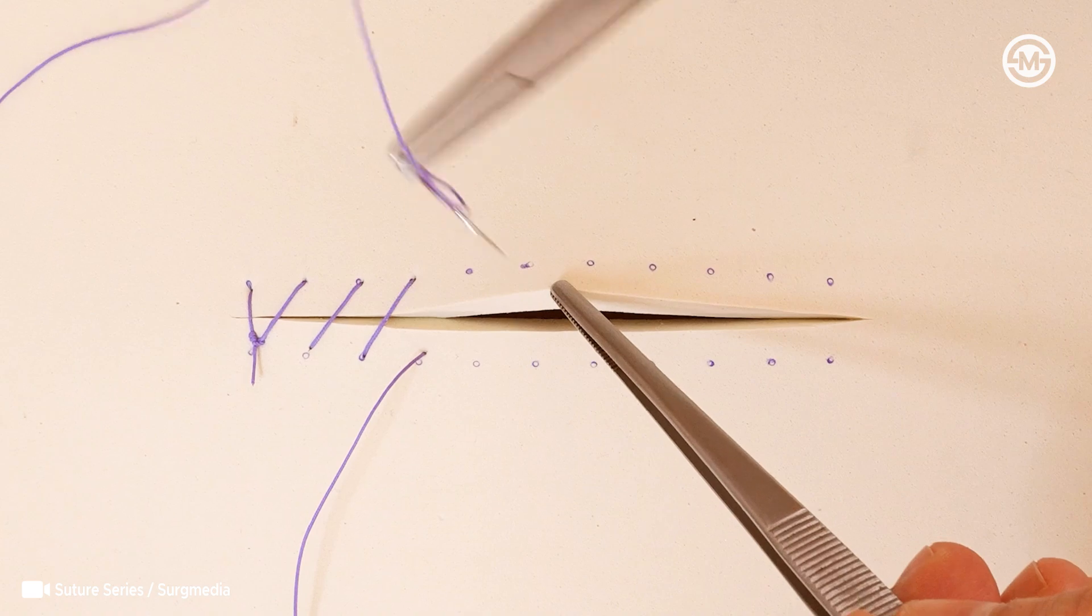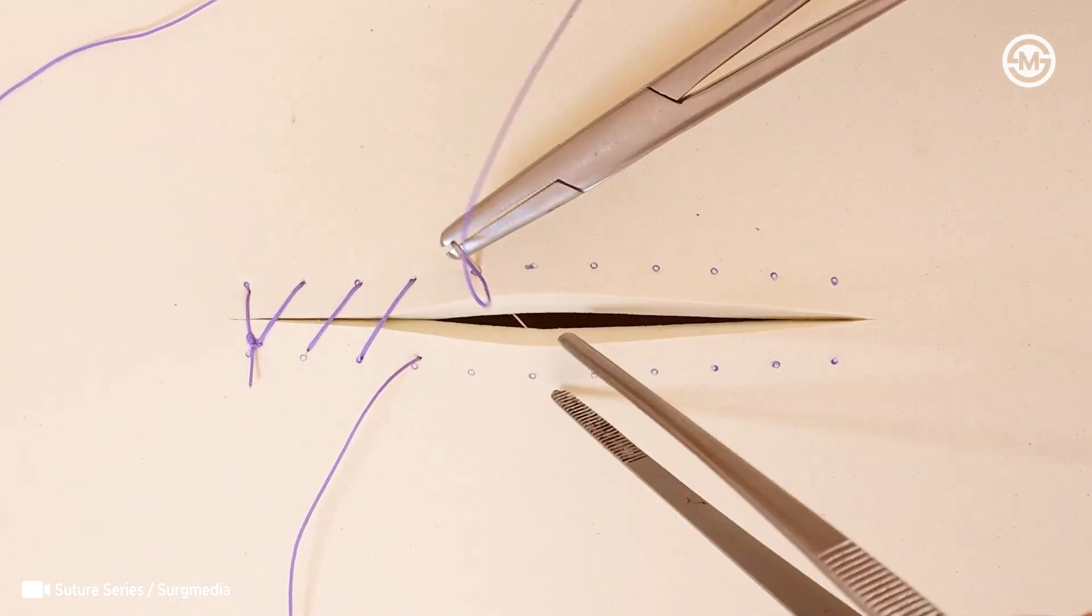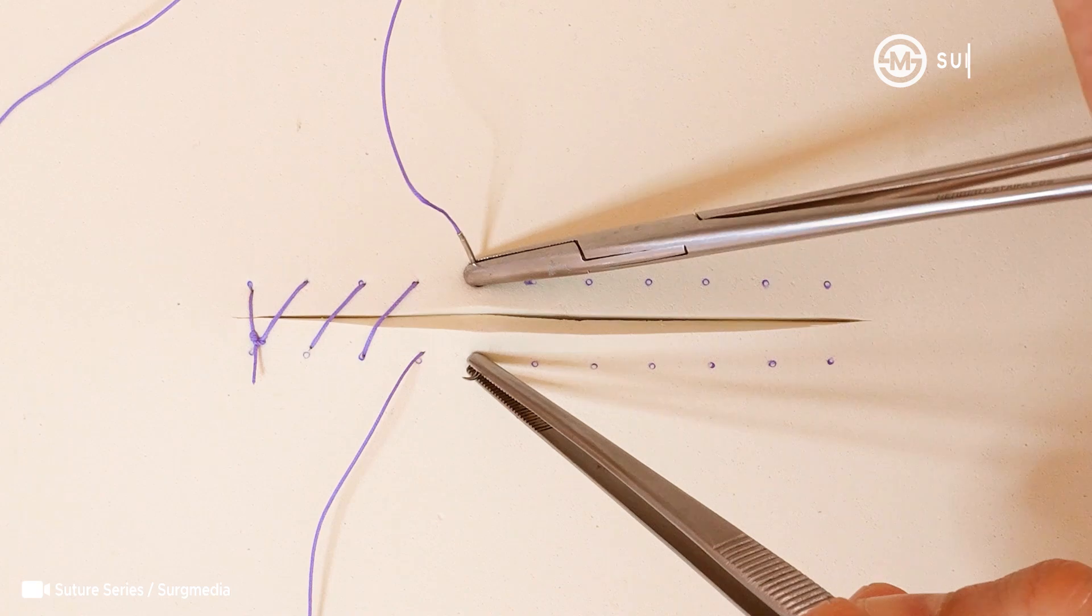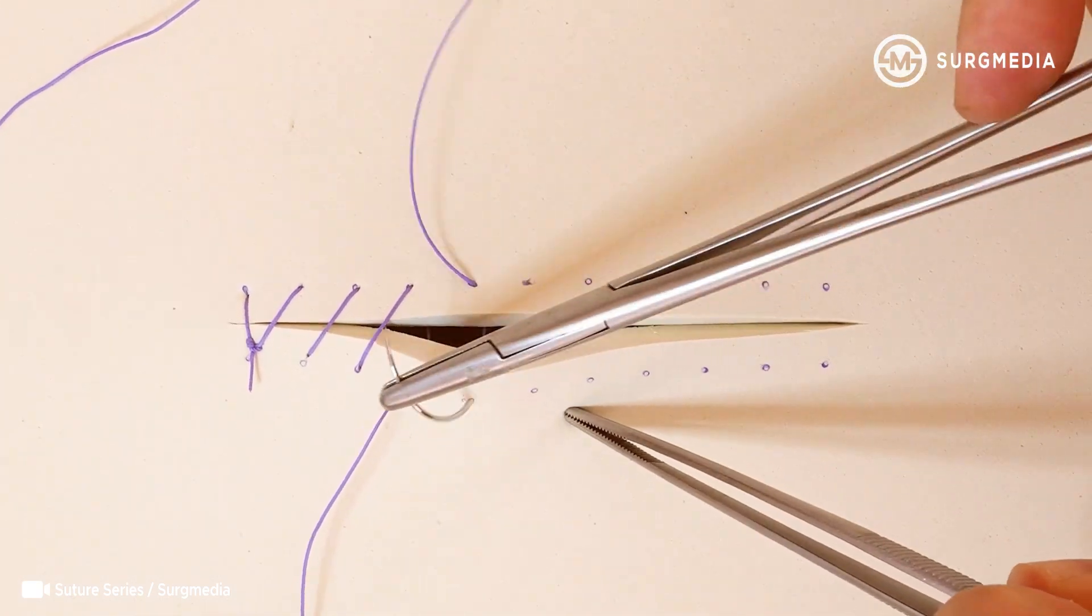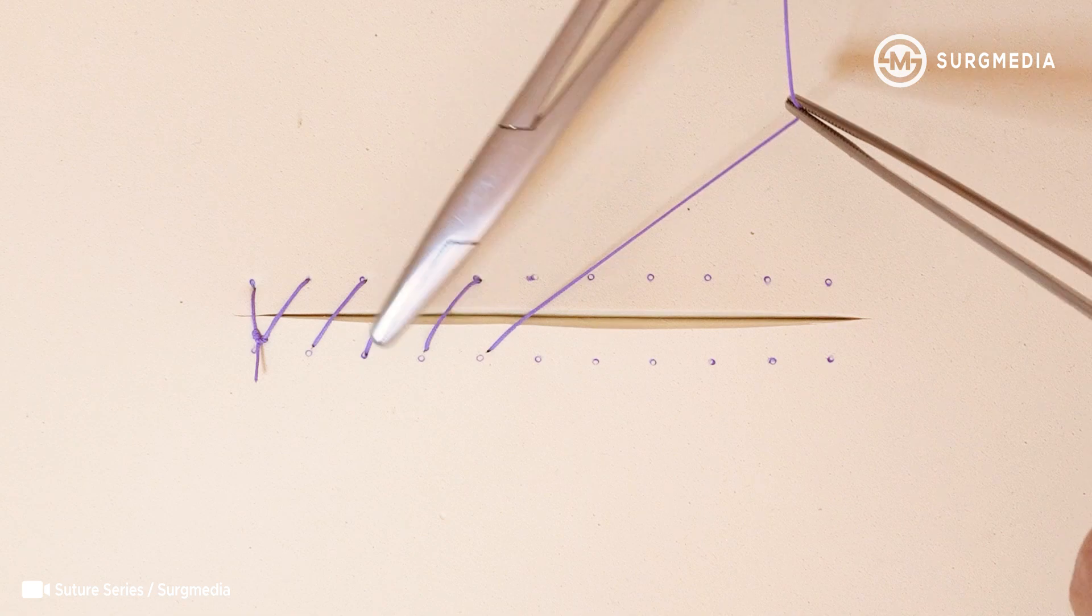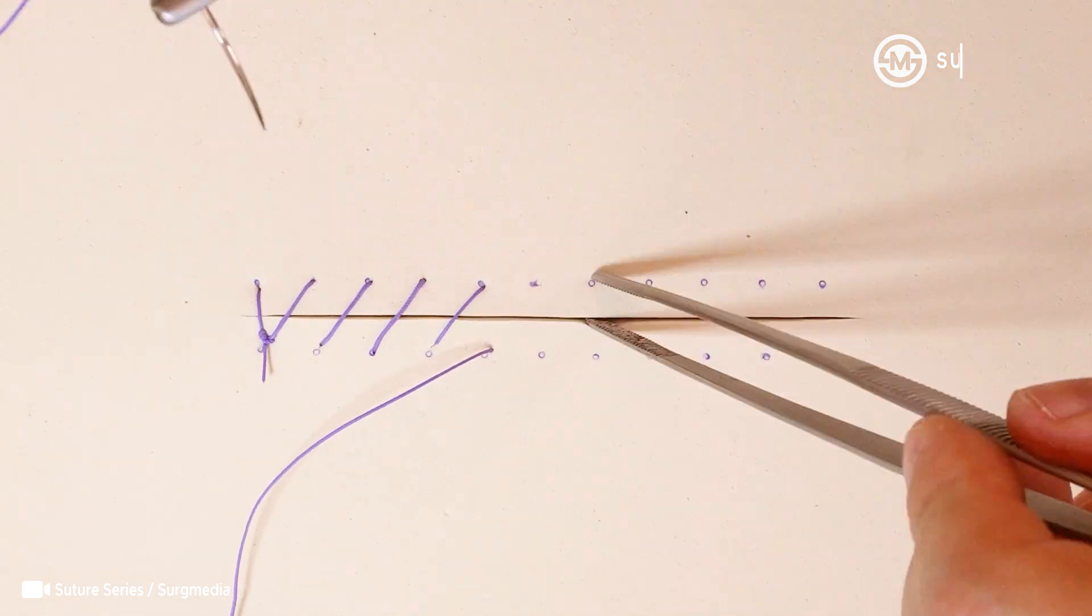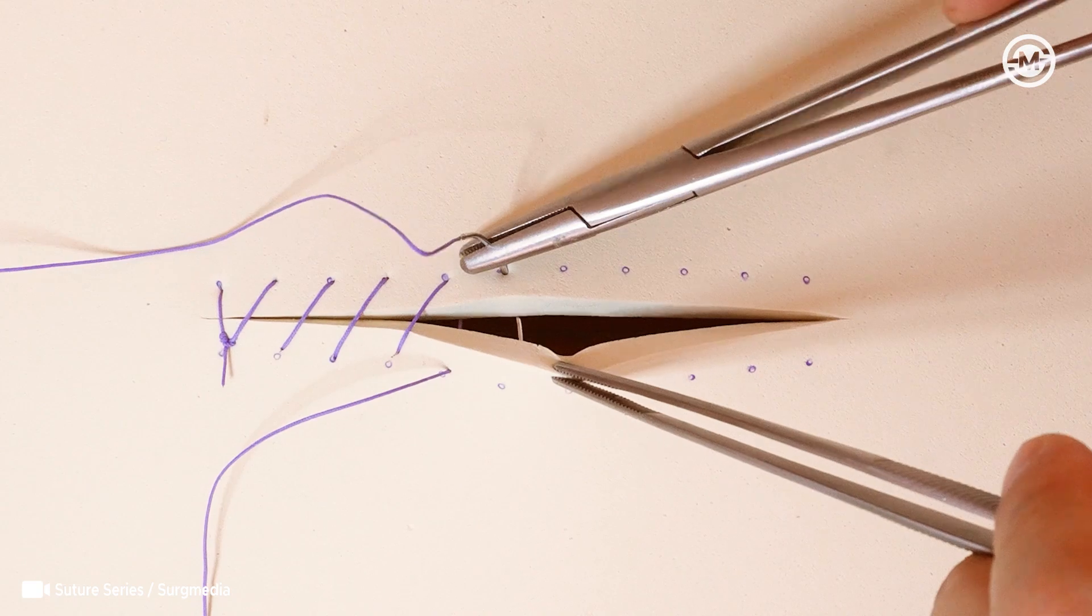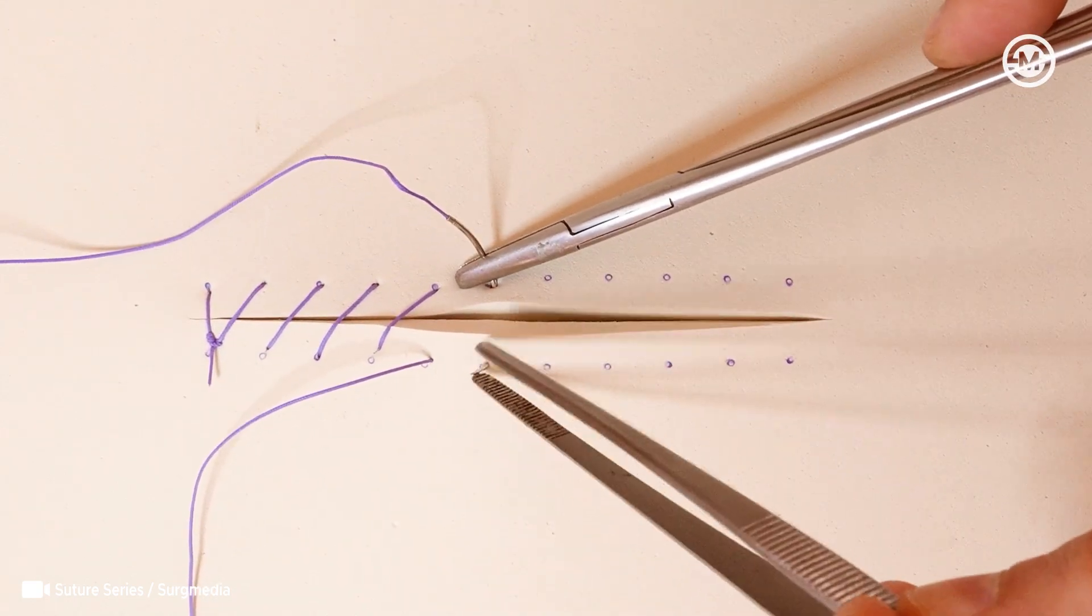Now let's talk about spacing, which is super important. In the short bite technique, you aim for 5mm depth and 5mm spacing between the stitches. In the long bite technique, it's more like 10mm deep and 10mm apart. The key is to keep things consistent. That helps with both tension and healing.